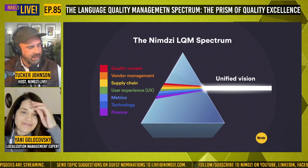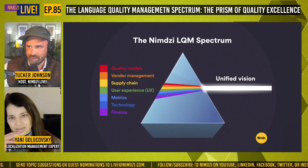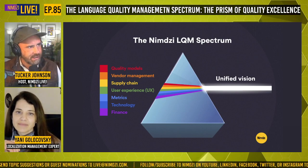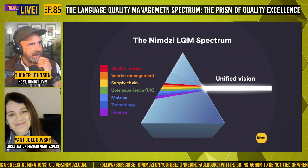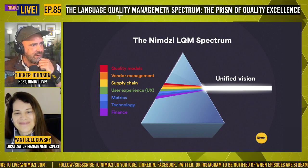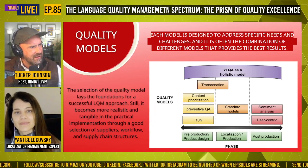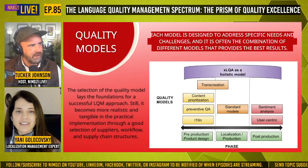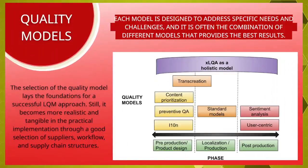We call it a spectrum because there are so many different steps in quality, and the seven components — quality models, vendor management, supply chain, user experience, metrics, technology, and finance — are all interrelated with no hard cutoff points between them. Today we'll go through each component, starting with quality models.